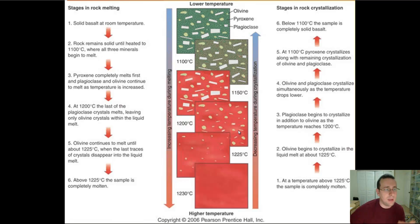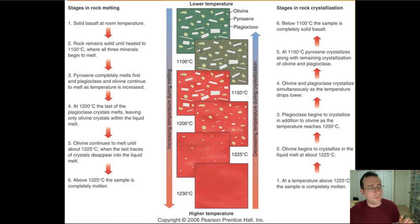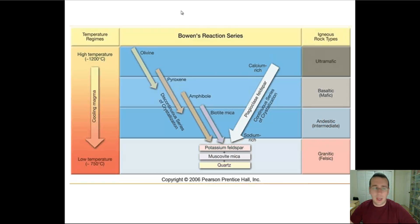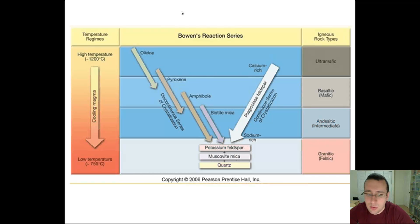This leads to fractional crystallization, where lava forms different minerals at different points. For example, the green minerals only form at the lowest temperatures. In rock melting you have partial melting, and in rock crystallization you have fractional crystallization — that explains the reaction series. As you go deeper into the earth, different types of rock form at different depths, and that's igneous rocks in general.